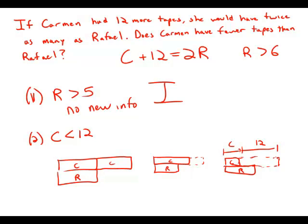So believe it or not, even though this only gives us information about the number of tapes that Carmen has and doesn't even mention Raphael, this statement by itself is sufficient. So statement number one is insufficient, statement number two is sufficient, answer choice B.